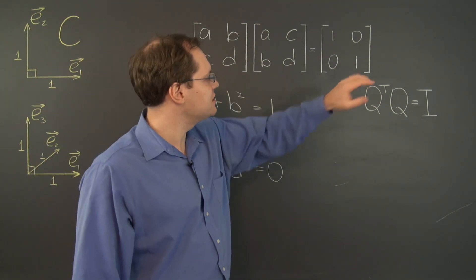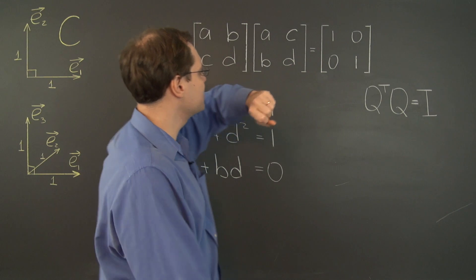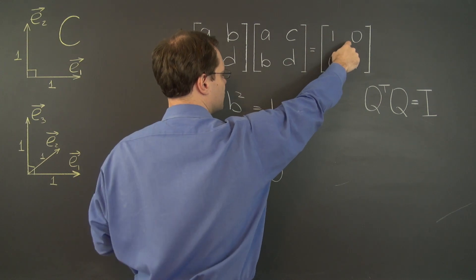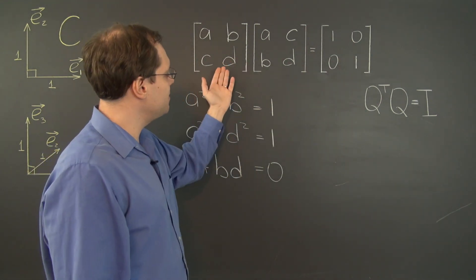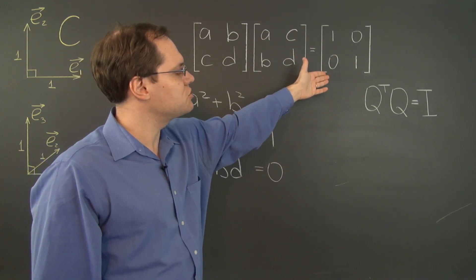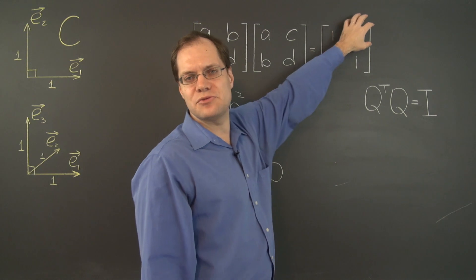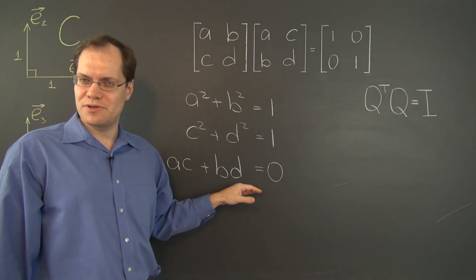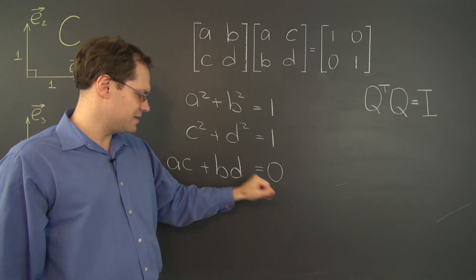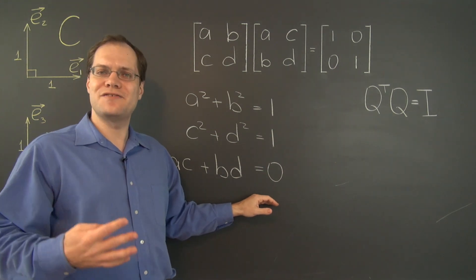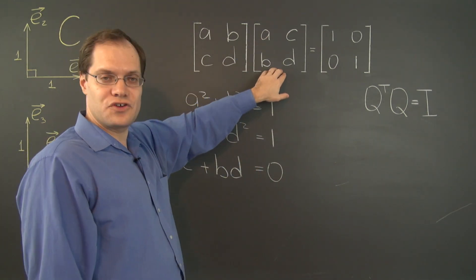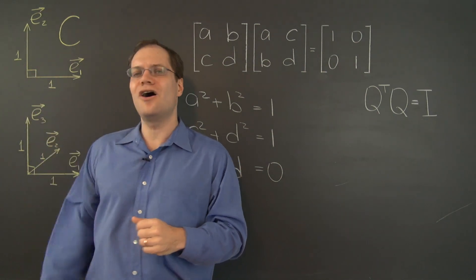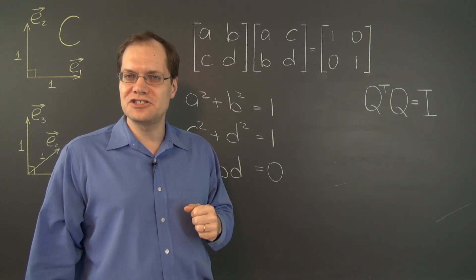The 0 entries come from AC plus BD equals 0. You might think there's an additional condition from the other 0, but when you multiply a matrix by its transpose you always get a symmetric matrix, so whatever is in the lower half is repeated in the upper half. There is no additional information — it's the same relationship, which is the statement that the columns of Q are orthogonal.